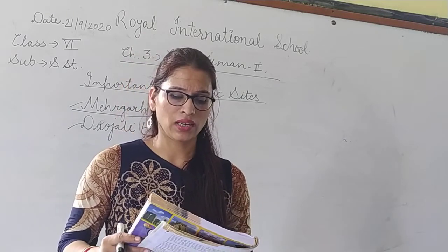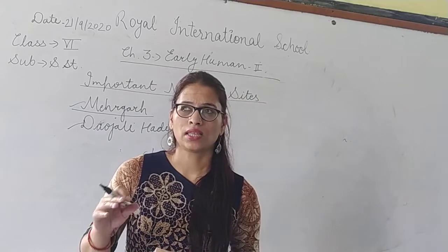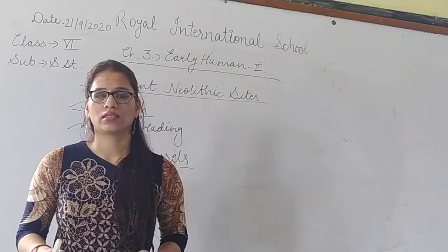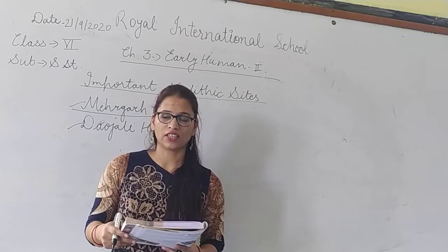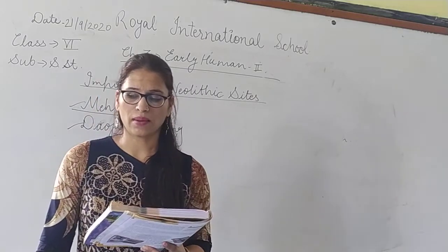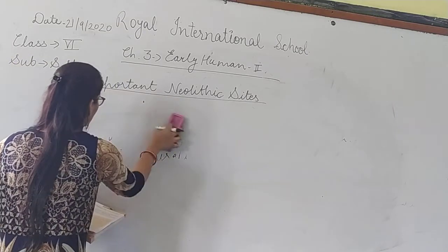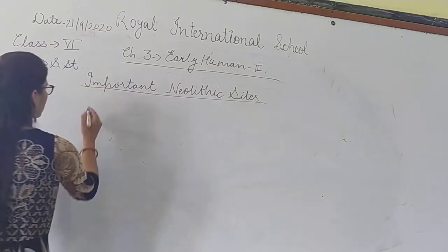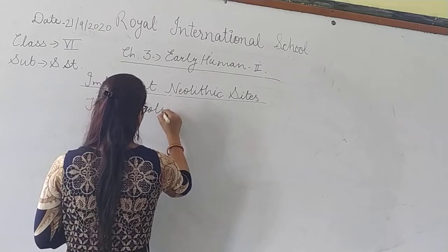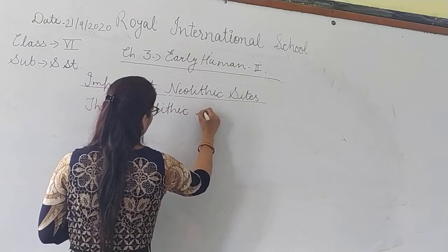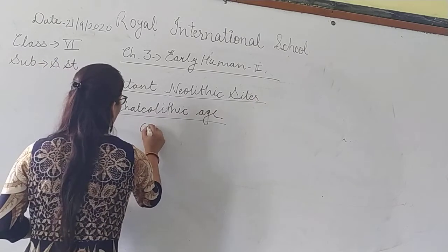Now we discuss the Chalcolithic age. The Chalcolithic age started when man started using copper. Before using any other metal like silver, gold, or iron, man first used stone tools. The Chalcolithic period started when man started using copper for the first time.